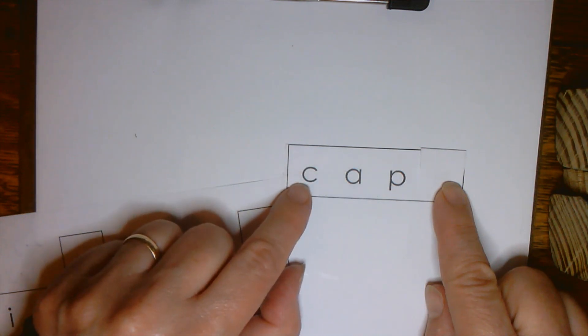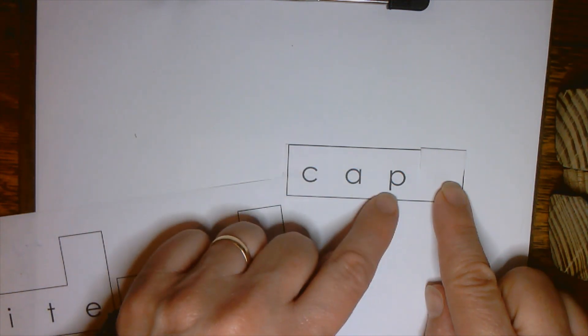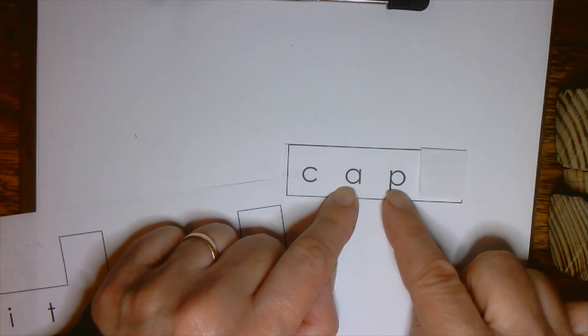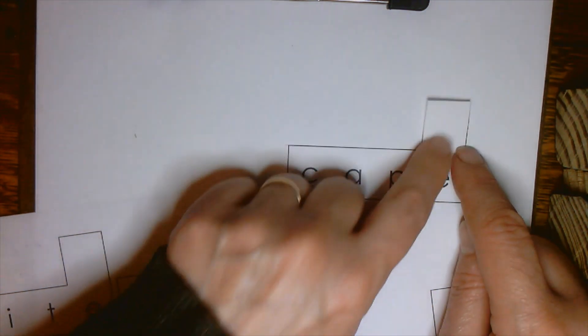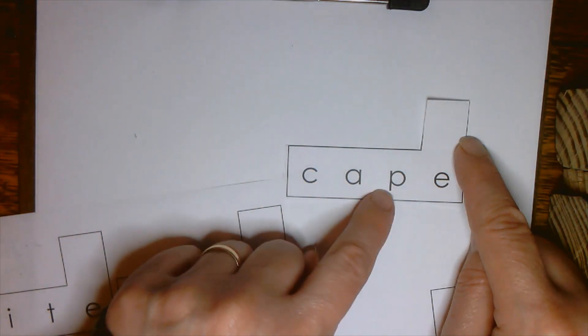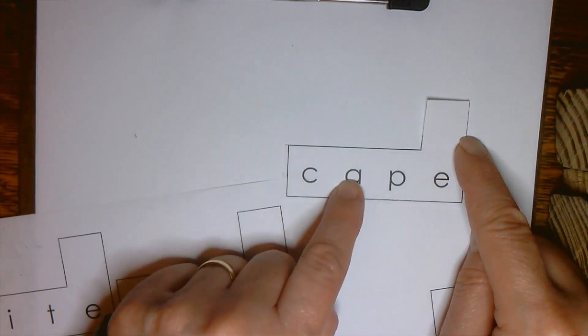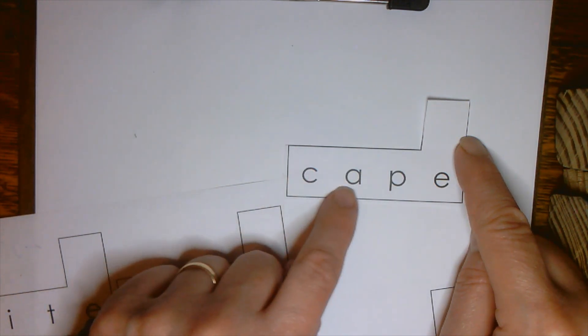Do you see how that's consonant, vowel, consonant, cap? It's a closed syllable with a short a sound. But then when we lift the flap up here, it becomes consonant, vowel, consonant, e, and this e is silent, gives its power to the a to say its name, so we have cape.